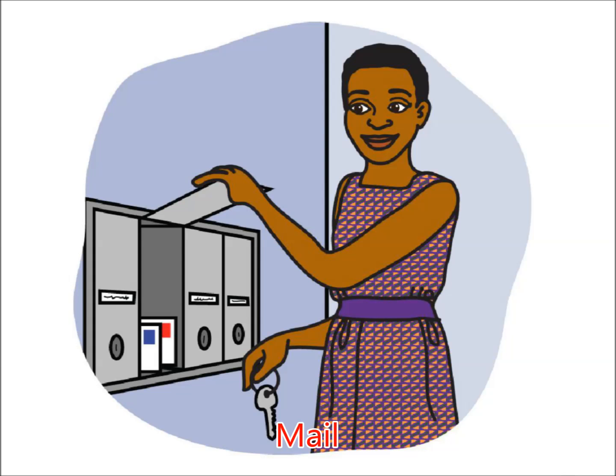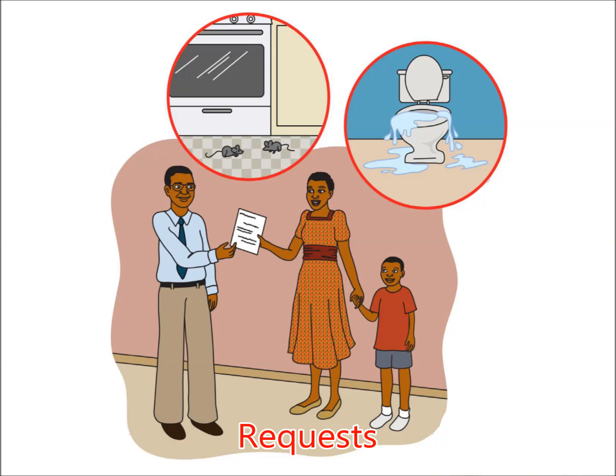Mail. Open and read your mail and put important papers in a safe place. Dispose of junk mail in a trash can in your home. Never sign something you do not understand. Requests. Landlords often require a written request before they will make repairs in your apartment. Use a repair request form from your landlord to write this request. Inform your landlord immediately if you are having problems with bugs, rats, mice, or plumbing.